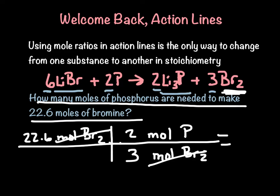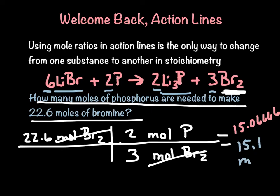I plug this into my calculator: 22.6 times 2 divided by 3. We multiply by everything on top and divide by everything on bottom. We get 15.0066666. Looking at sig figs, we had three sig figs in 22.6, and the coefficients are exact quantities. So I need three sig figs: 15.1. My answer is 15.1 moles of phosphorus — a simple action line that you can do.